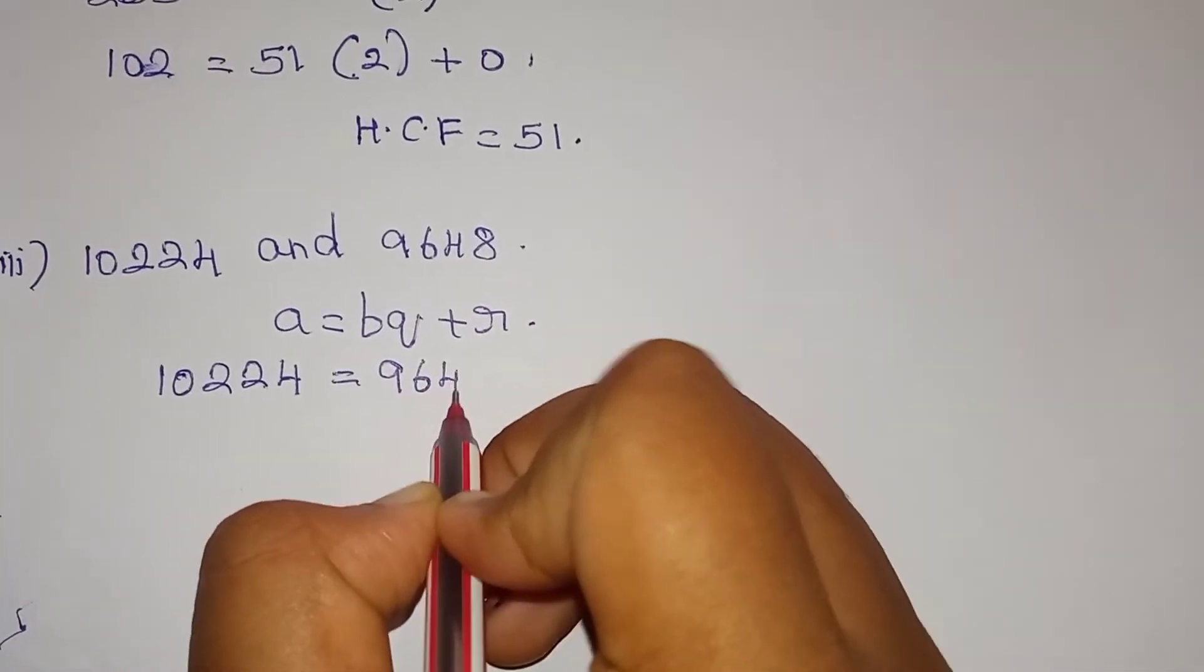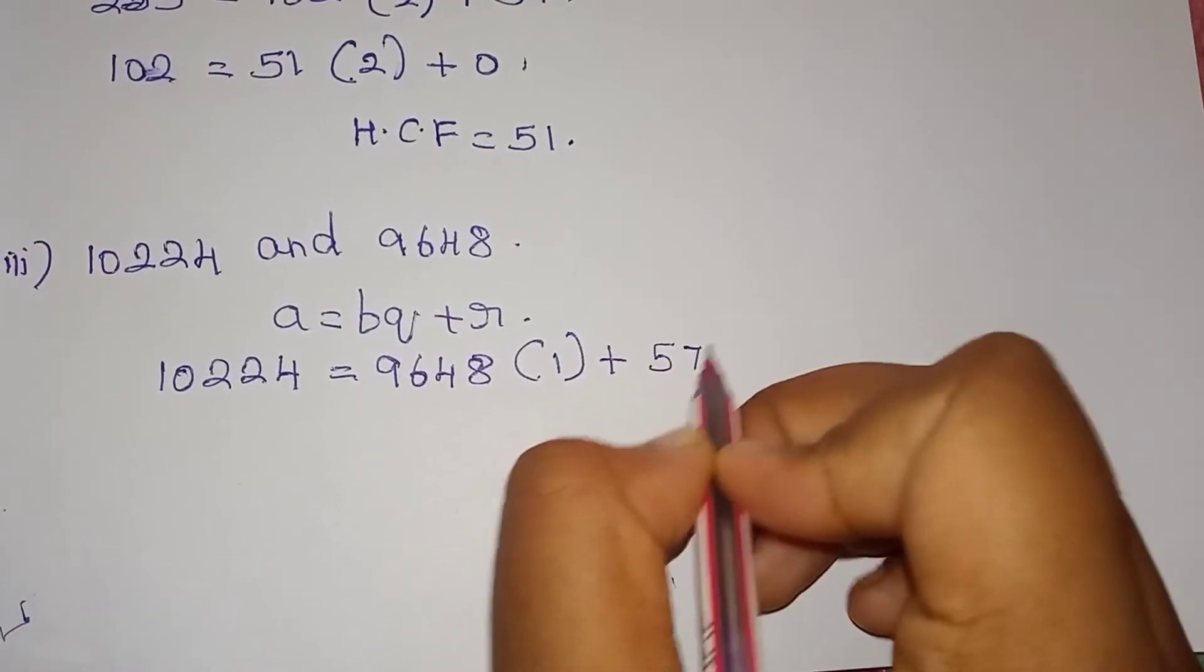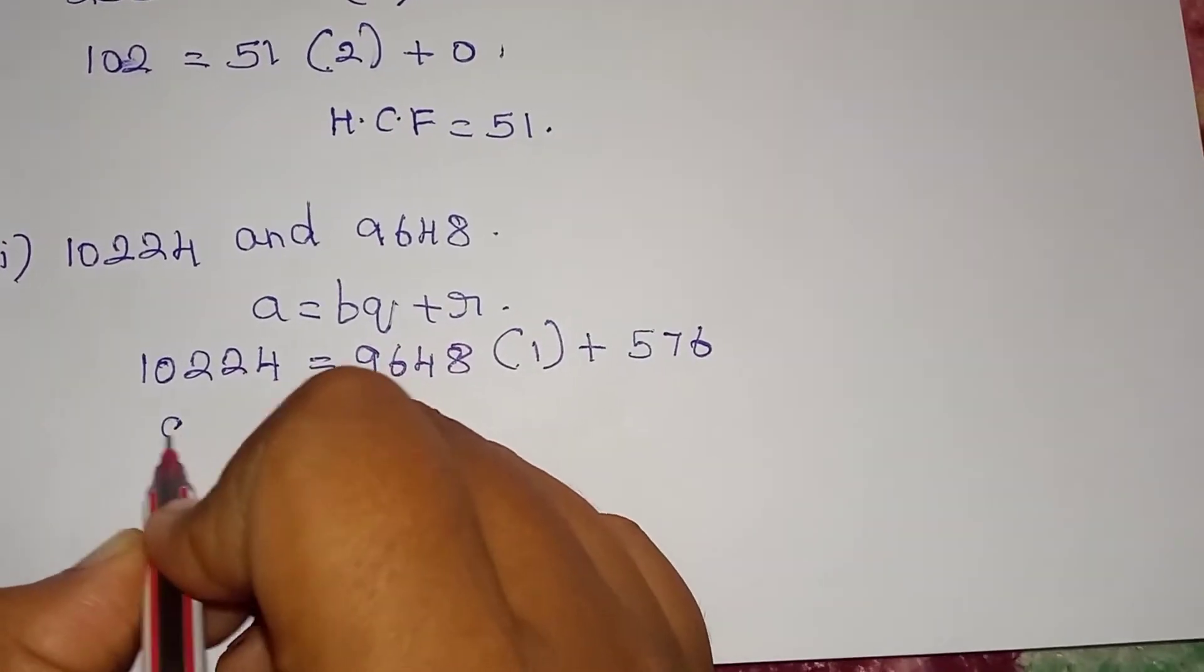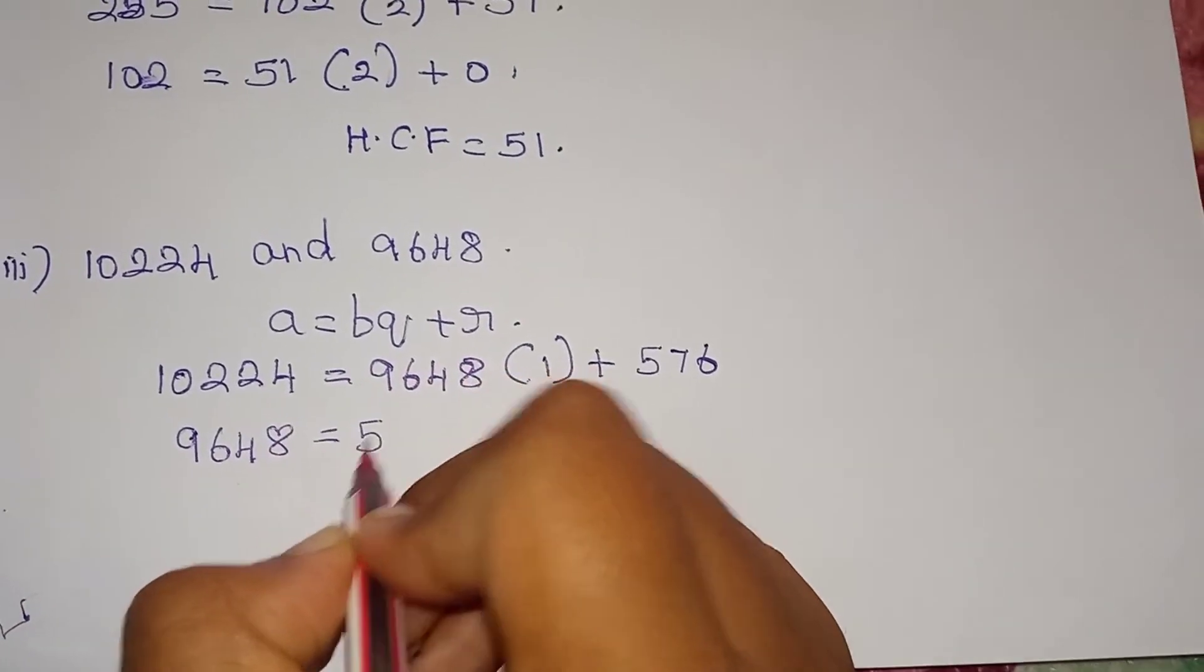9648 times 1, remainder 576. The minimum is equal to 576.